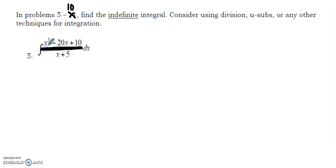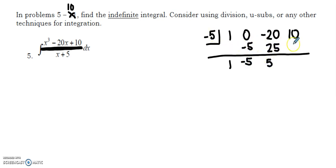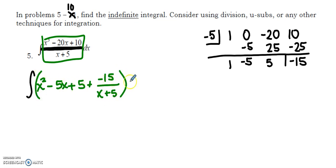You could use synthetic division because we have a linear on the bottom. I could put -5 in the synthetic box. I would need a 1, a 0 for a placeholder, -20 and 10. Bring down the 1, -5, -5, 25, -25, -15. So what I just figured out is that this part in green is mathematically exactly equivalent to having x²-5x+5 plus a remainder of -15 when I was dividing by x+5.